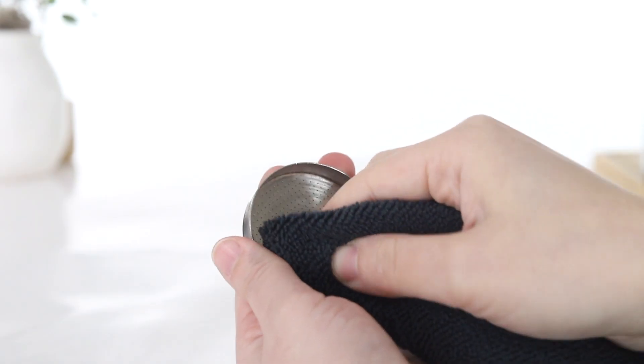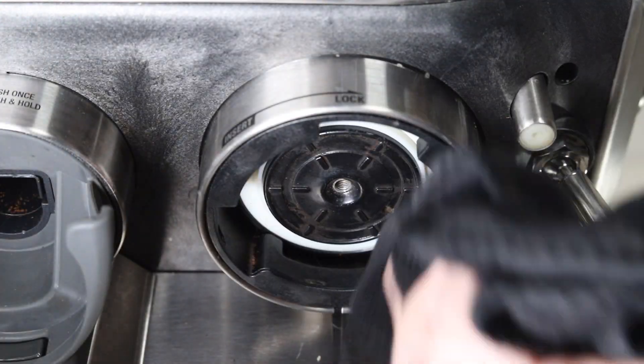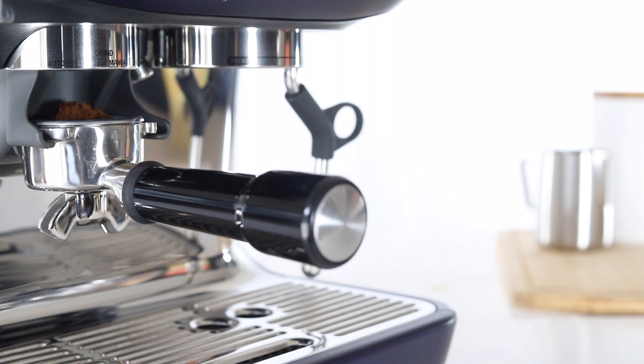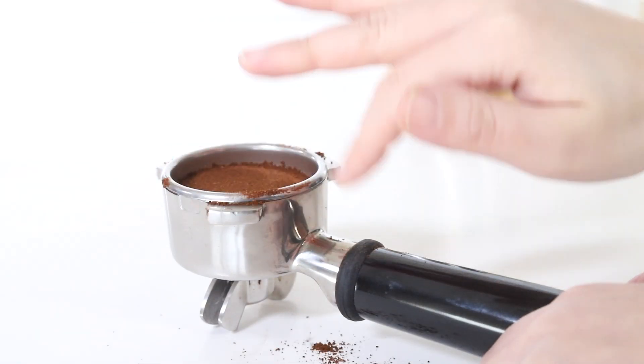For best maintenance, we recommend regular cleaning of the shower screen and shower plate. Also, be sure to remove any loose grinds from the portafilter rim prior to brewing your espresso to prevent any buildup.